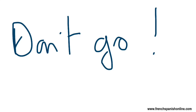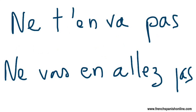And if you want to say the negative form — 'don't go', 'don't go away' — because the verb 'to go' in French doesn't like to be alone, we need the word en. We will say ne t'en va pas or ne vous en allez pas.